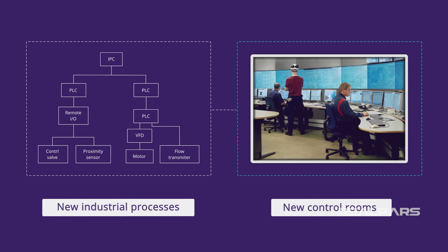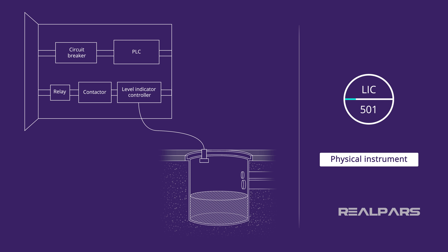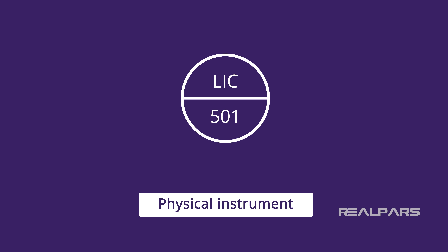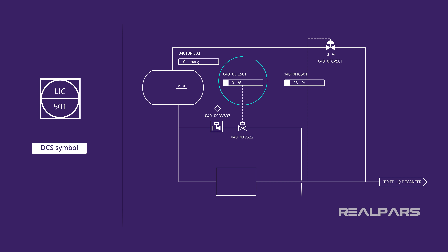So let's look at the P&ID symbols for PLC and DCS. Stand-alone instruments are indicated on a P&ID by a circle with a tag number. The horizontal bar across the middle of the circle indicates the physical instrument resides in a primary location accessible to an operator on the main control panel. If we take that same symbol and draw a box around it, it now means it is no longer a physical instrument — it is now part of a shared display and shared control in a DCS.